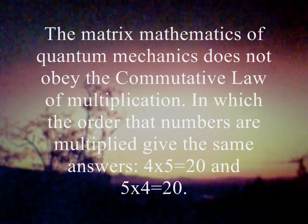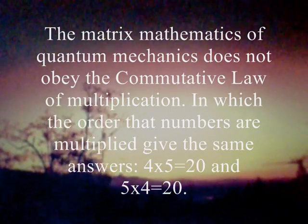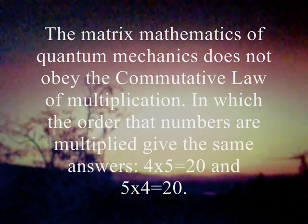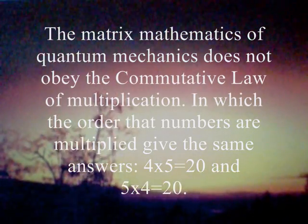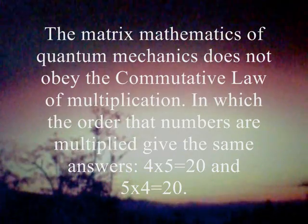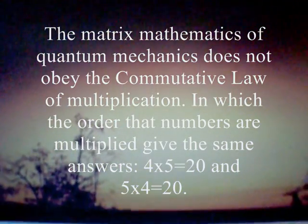This video gives us a logical reason why the matrix mathematics of quantum mechanics does not obey the commutative law of multiplication, where x times y is always equal to y times x.